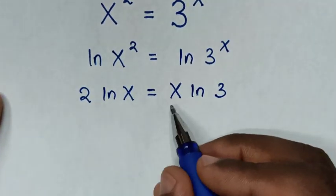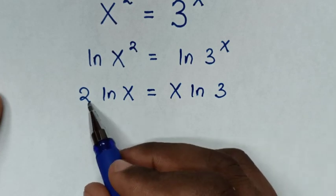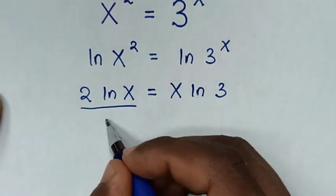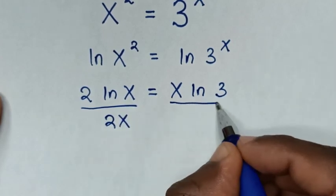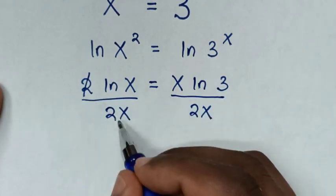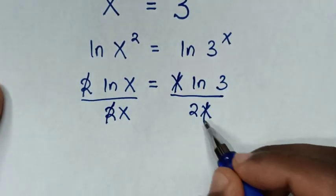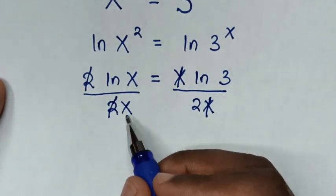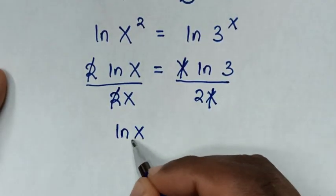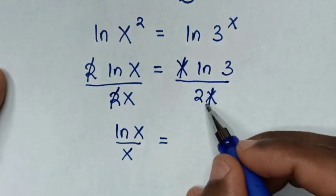Then in the next step, we make like terms of x on one side. So we will divide both sides by 2x. This 2 and this 2 will cancel, and this x and this x will cancel. So it will be ln(x)/x is equal to ln(3)/2.